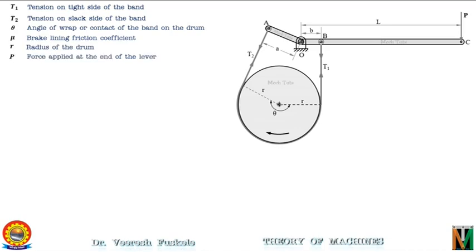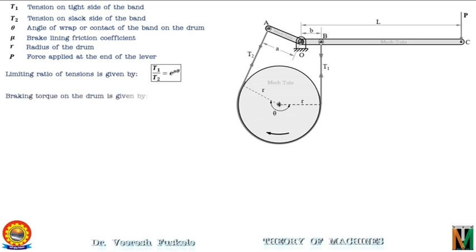As discussed earlier, the limiting ratio of tensions is given by T1/T2 = e^(mu·theta), and the braking torque on the drum is given by Tb = (T1 - T2) × R. These two equations will be used for solving the numericals.